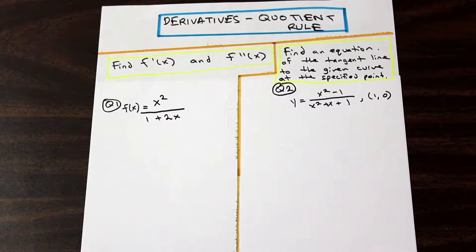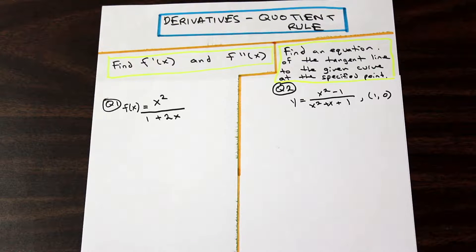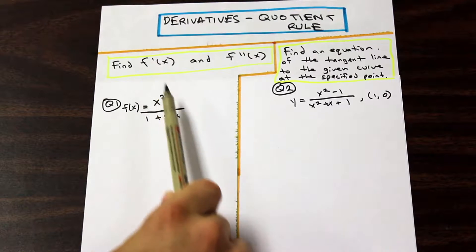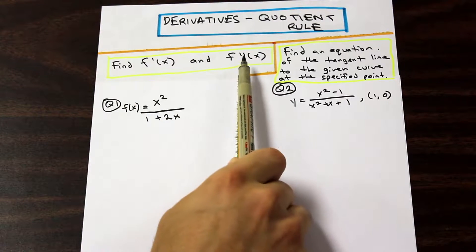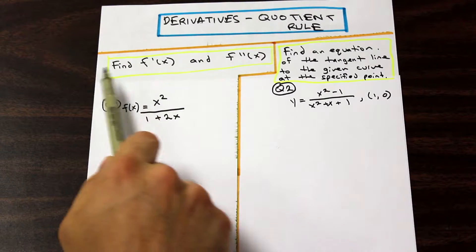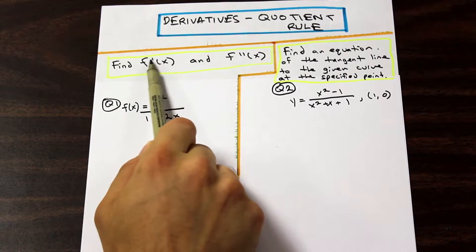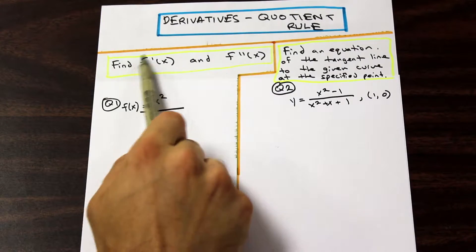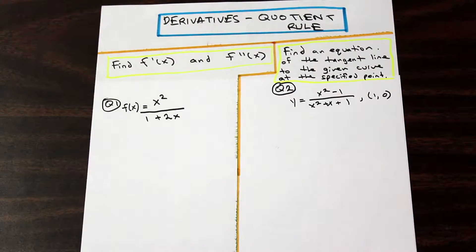So this video is going to be dedicated to the quotient rule. We're going to do some more difficult quotient rule questions where the question is asking us for different things other than just the first derivative. The first derivative is when we apply the quotient rule once to the function, and the second derivative — we just find the derivative again of the derivative. That's all the second derivative is.